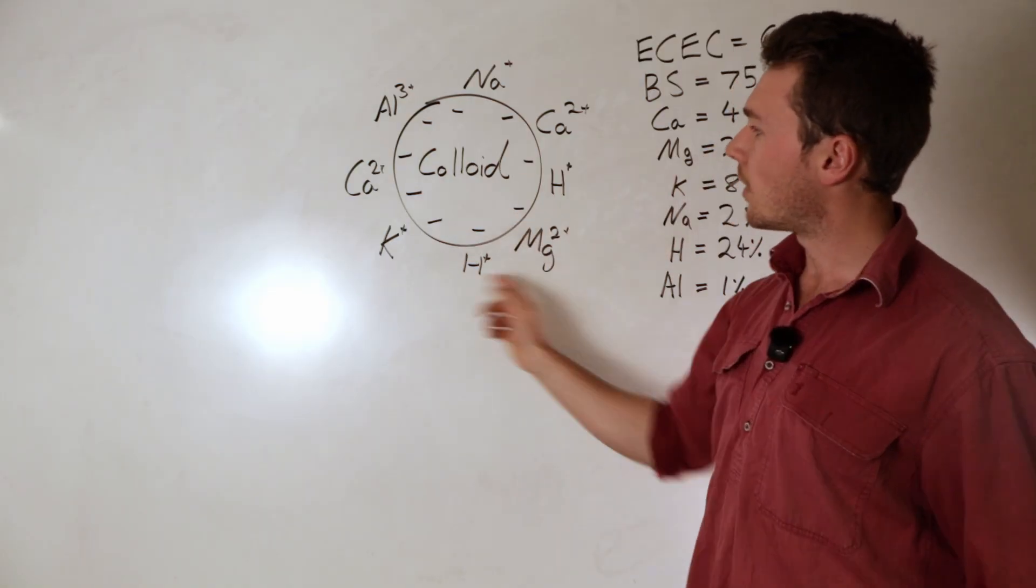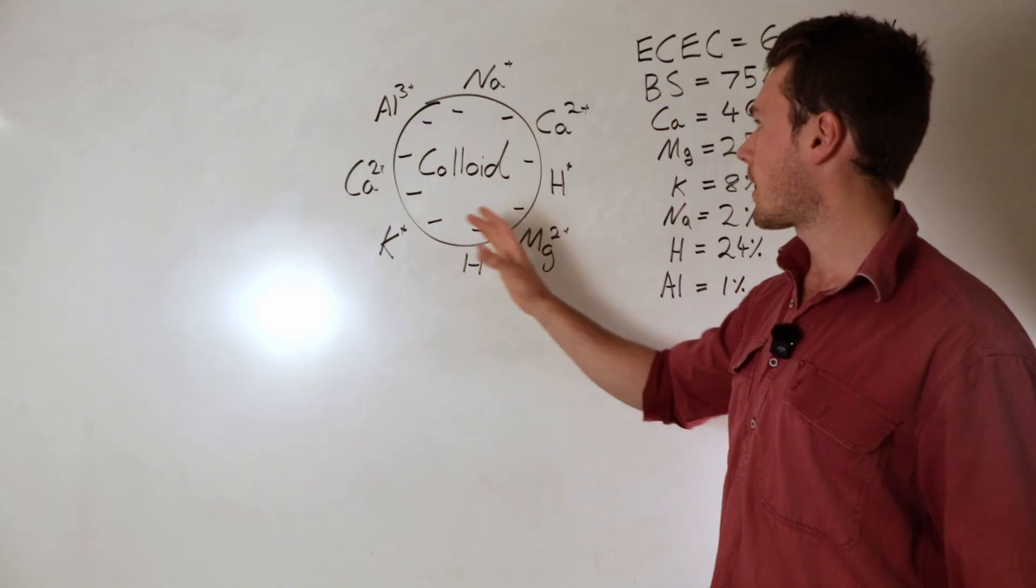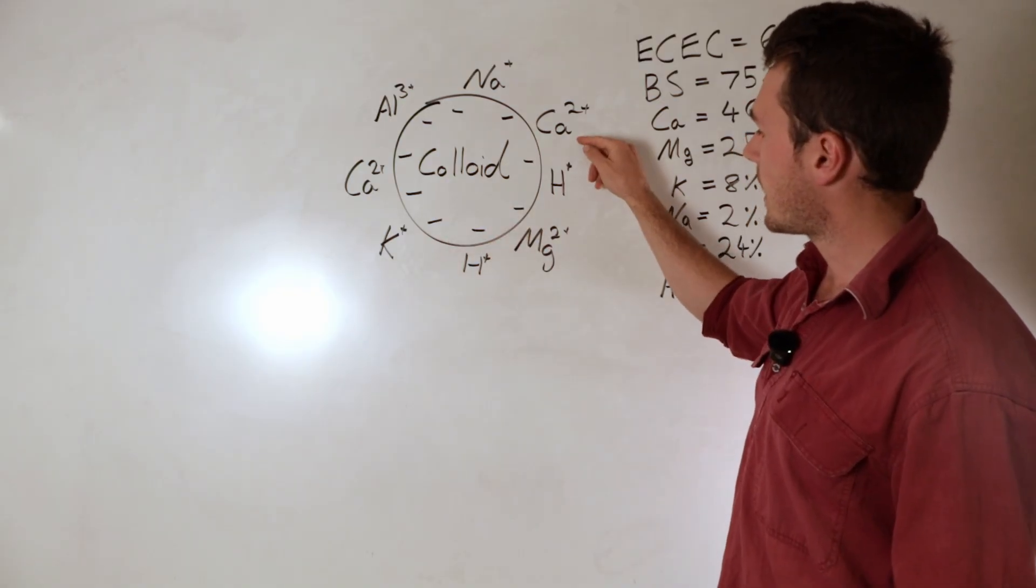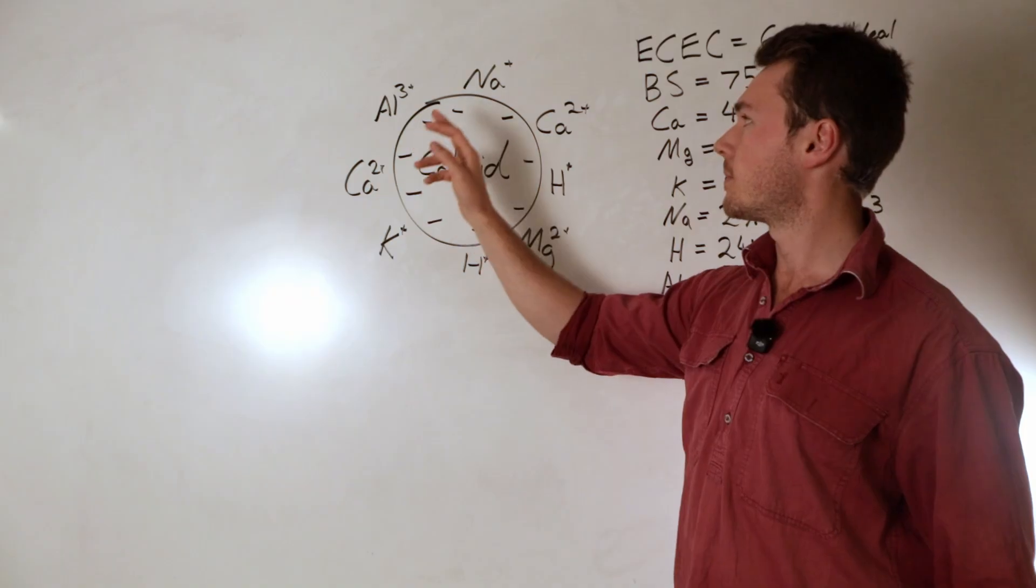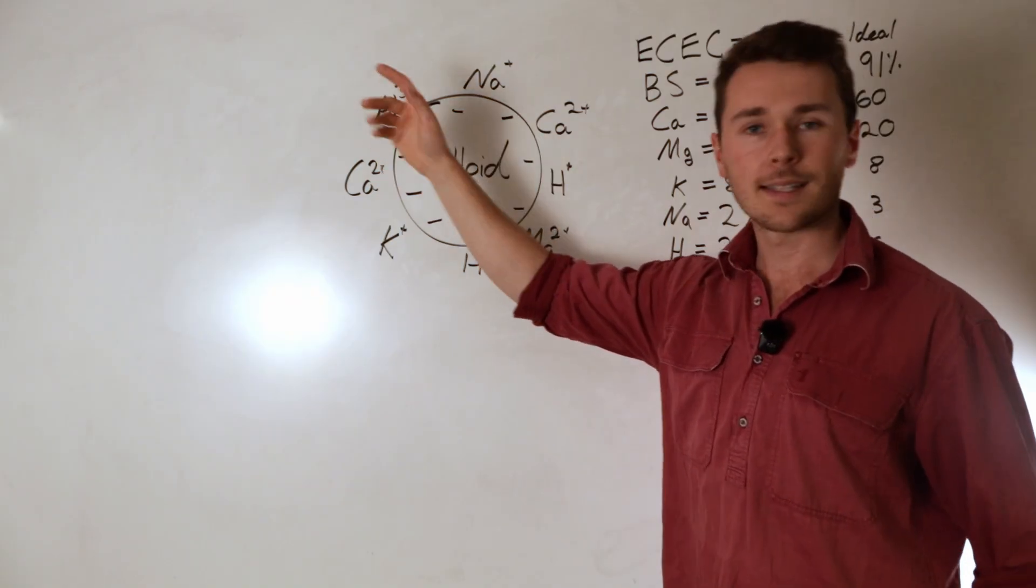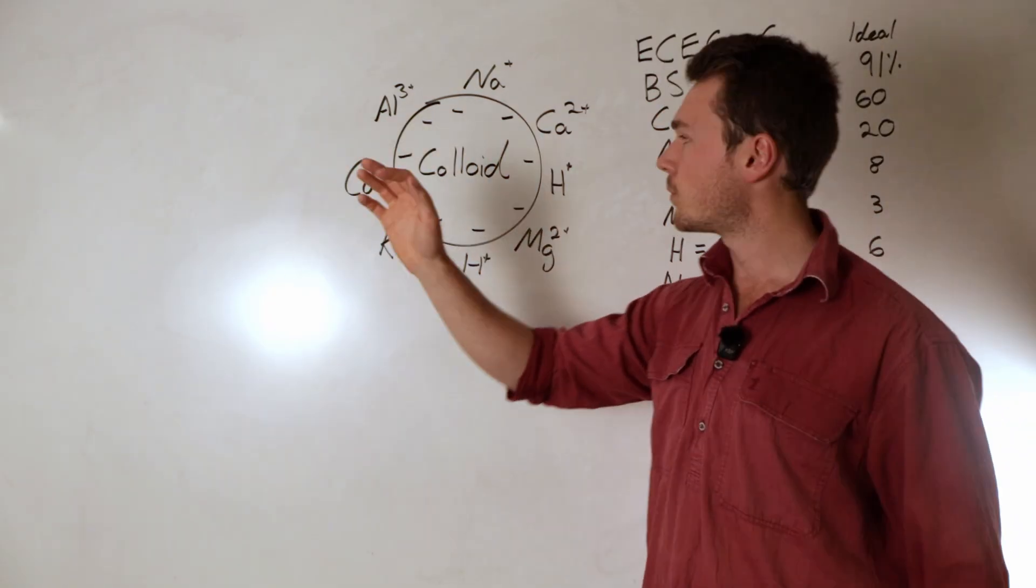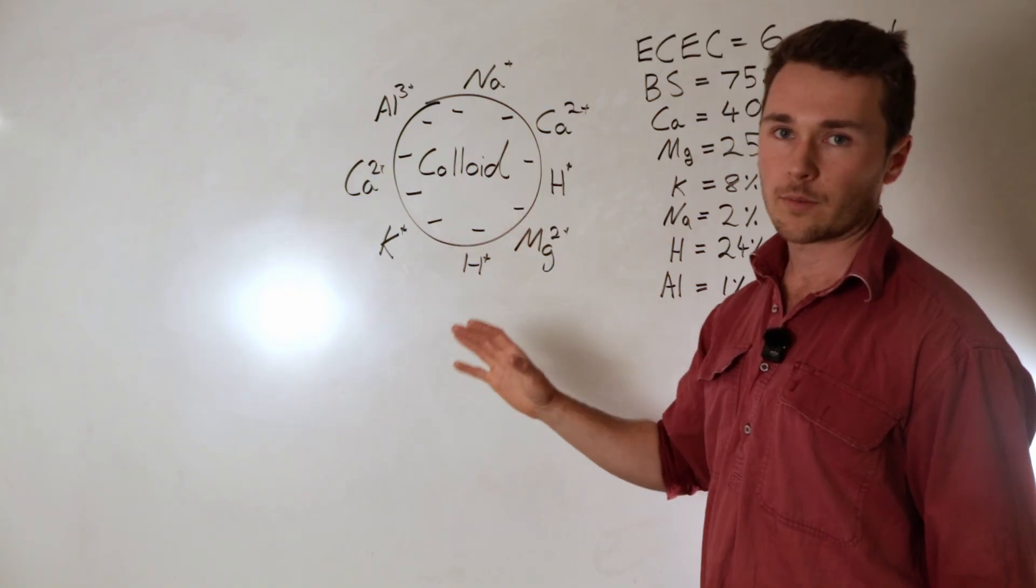Now the ratio of these cations, and these cations consist of calcium, magnesium, hydrogen, potassium, sodium, and aluminum. Now there's a few others like iron, manganese, all that, but these are the macro or the main large ones.